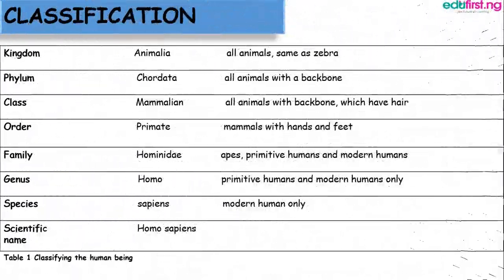The next level is the class. Characteristics at this level are as follows: they are all aquatic animals; they possess gills for respiration throughout their lives; they possess fins for locomotion; their bodies are streamlined in shape; and they are cold-blooded animals.